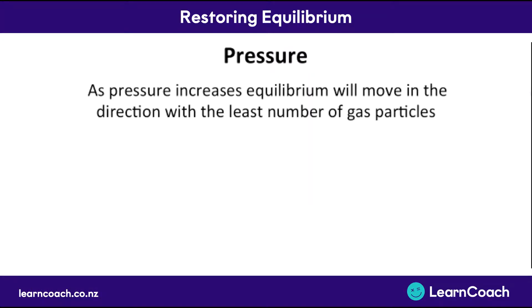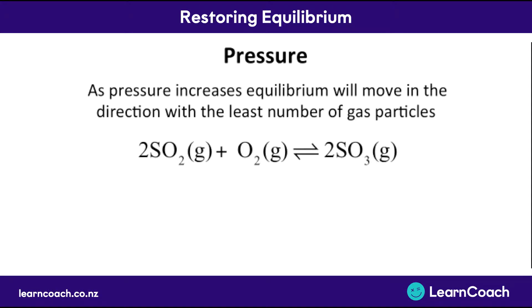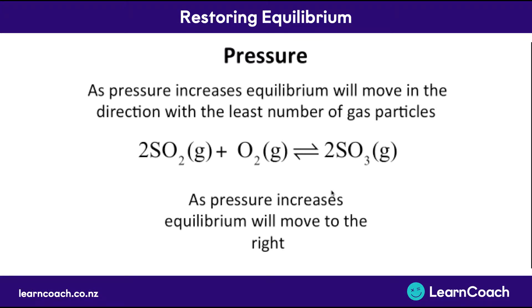Secondly, let's look at pressure. As pressure increases, equilibrium will move in the direction with the least number of gas particles — and remember, this is gas particles only. Looking at our original equation: on the left-hand side we have two SO2 molecules and one oxygen, giving three gas molecules; on the right-hand side we have two SO3 molecules. So if we increase the pressure, equilibrium will move to the right. If we decrease the pressure, equilibrium will move to the left.